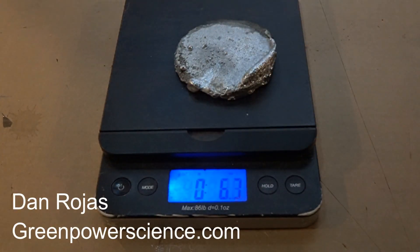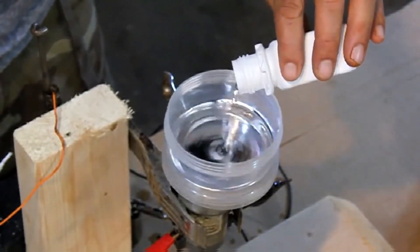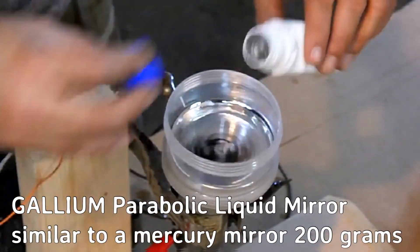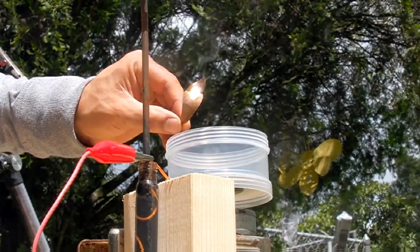Hello there, I'm your host Dan Rojas and this is almost 7 ounces of pure gallium. In a previous video I placed gallium inside of a homemade centrifuge on a warm sunny day to create an adjustable liquid mirror that concentrates sunlight.